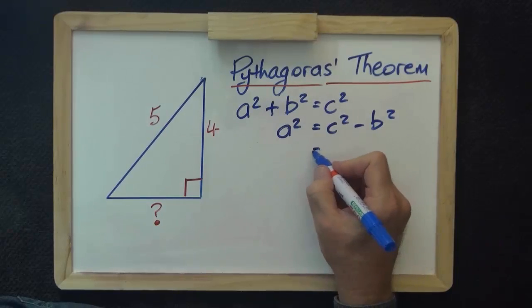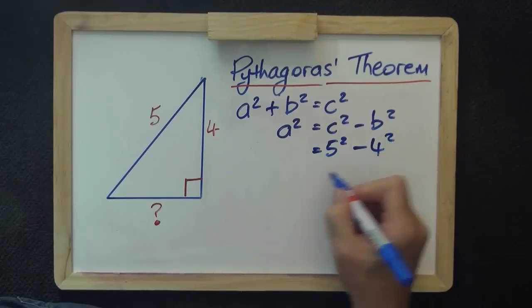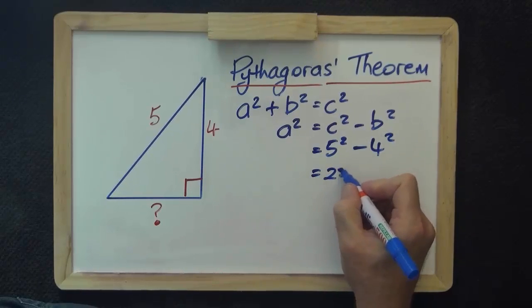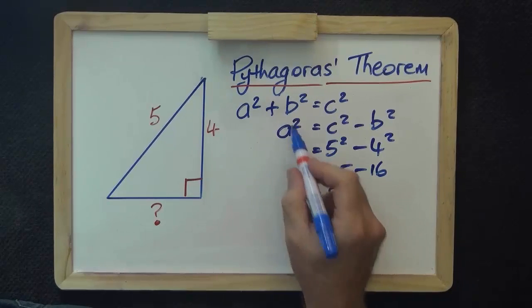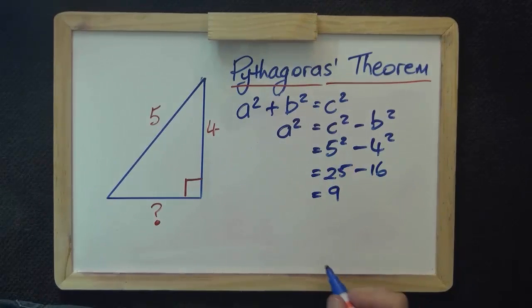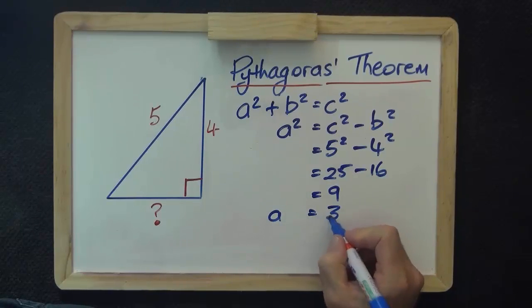Because we know c in this case, 5 squared, and we know b, 4 squared. So it's 25 minus 16 equals 9. Well, a squared equals 9. So a equals 3.